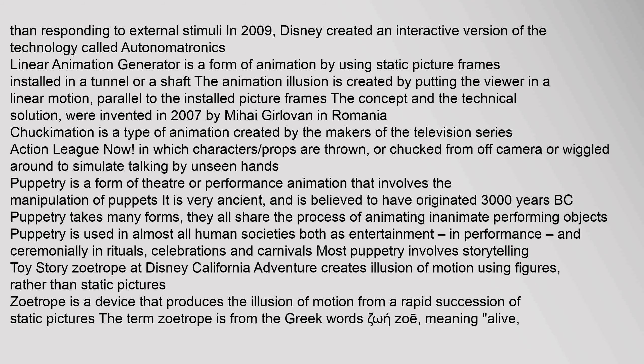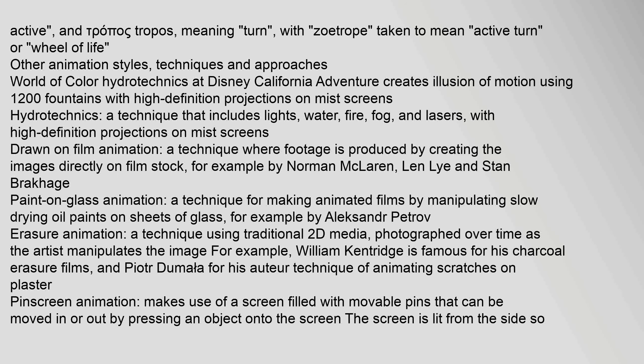Chuckimation is a type of animation created by the makers of the television series Action League Now, in which characters and props are thrown or chucked from off camera or wiggled around to simulate talking. Puppetry is a form of theatre or performance animation involving the manipulation of puppets, believed to have originated 3000 years BC, used in almost all human societies as entertainment, in performance, and ceremonially in rituals, celebrations, and carnivals. The Zoetrope is a device that produces the illusion of motion from a rapid succession of static pictures; the term comes from Greek words meaning alive and turn, taken to mean wheel of life.